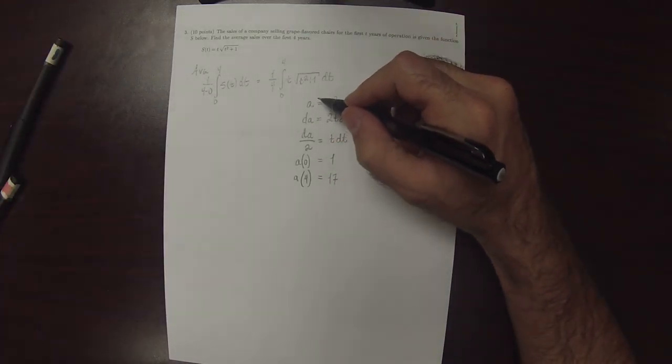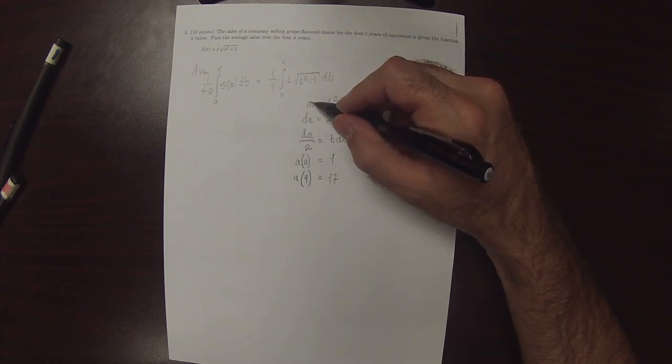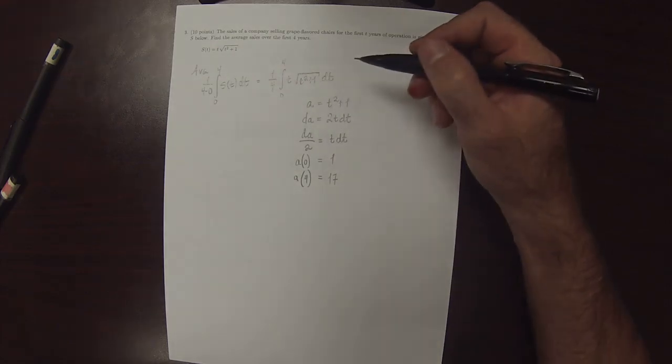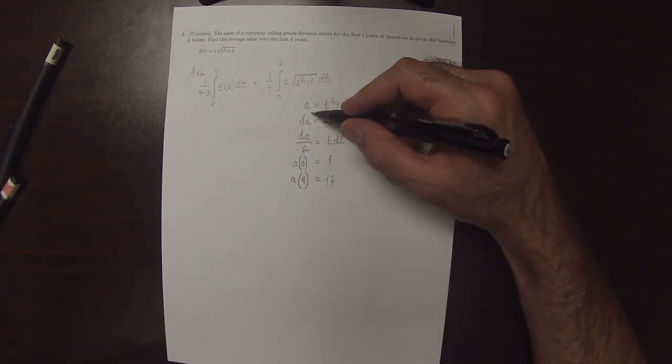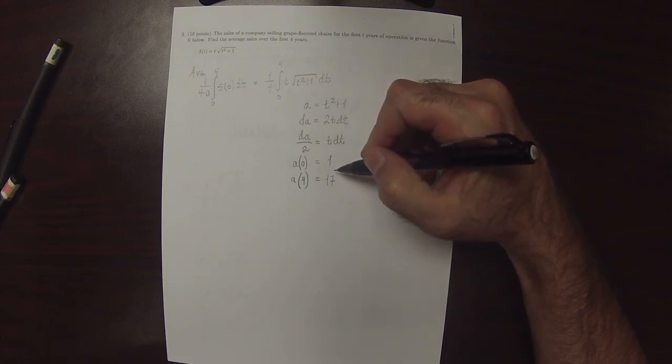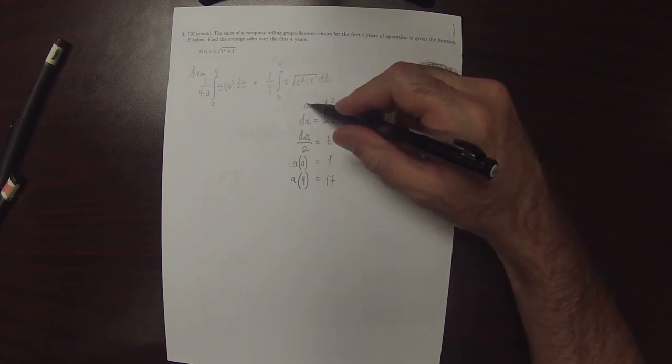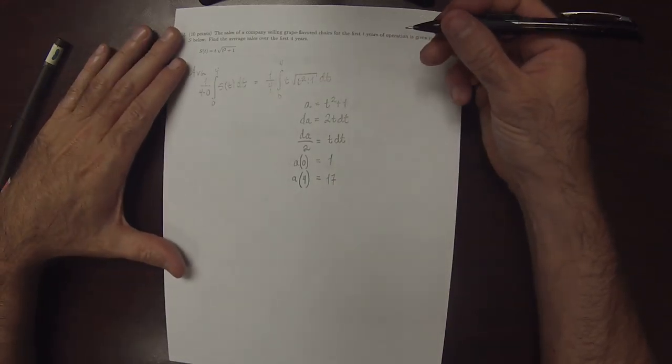So for students who are a bit thrown off by me using A instead of U, the reason why I'm doing that is just to break you of the notion that U is somehow special as a letter. You can use any letter that you like to perform the substitution.